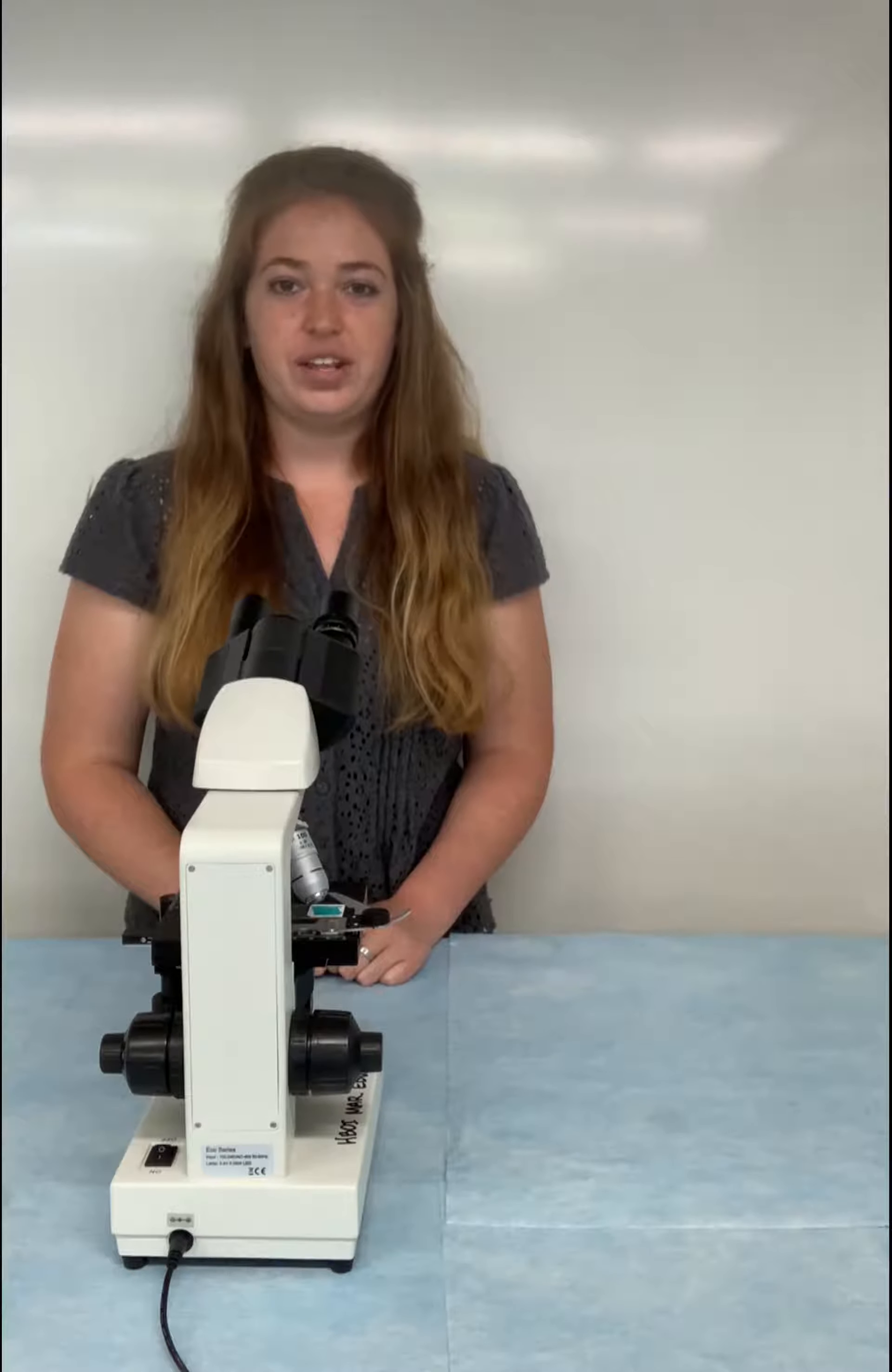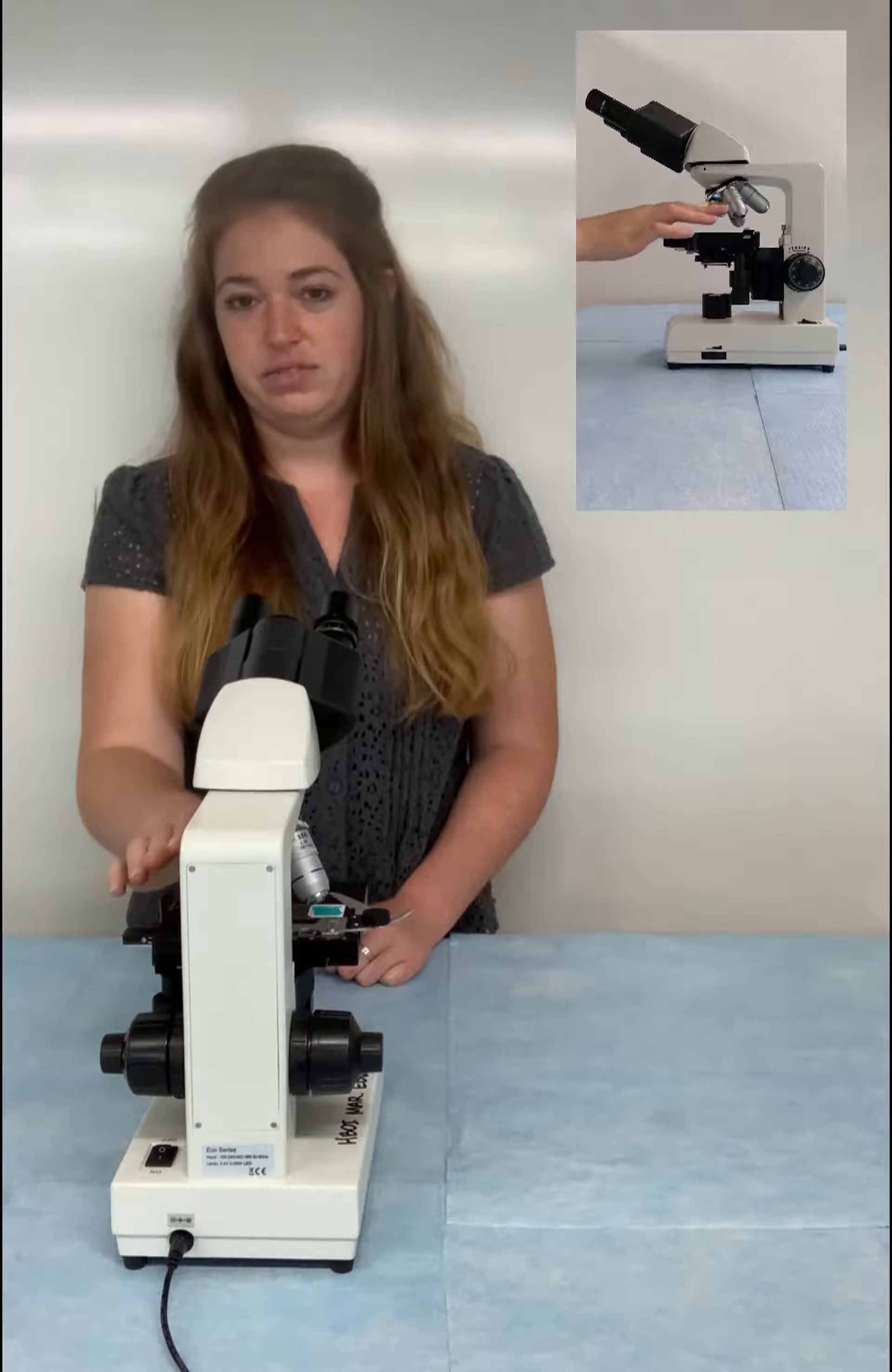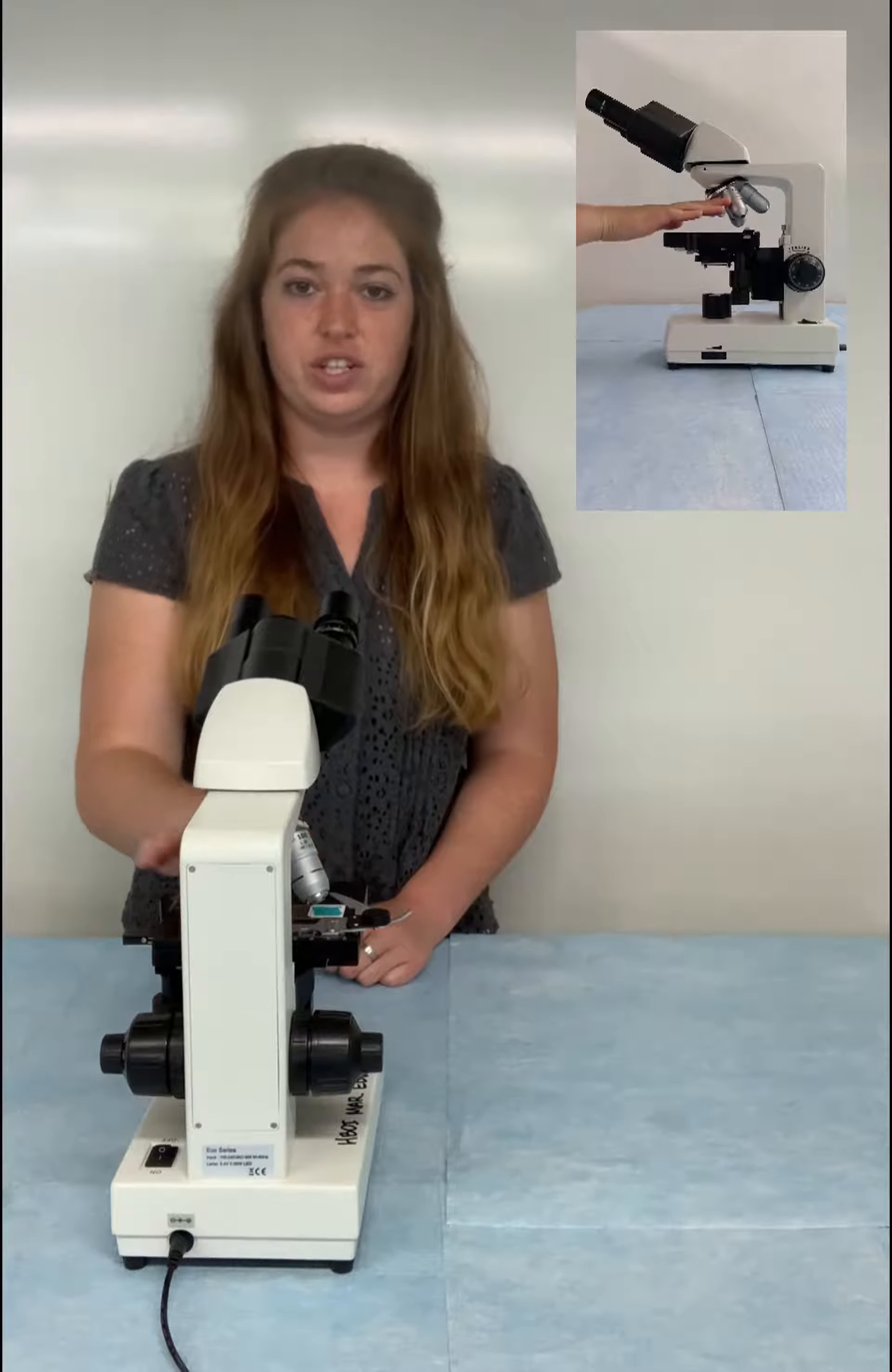Now that we can see our specimen under the microscope we may want to have a higher magnification to see it up closer. To do that we're going to switch our objectives. These are the objectives that control the magnification. Typically when you come to Harbor Branch these objectives will already be put into the position that you need. However if you would like to change your objective or magnification while at Harbor Branch, be sure to inform an instructor and they will help.